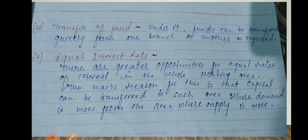The fourth point is equal interest rate. There is greater opportunity for equal rate of interest in the whole working area. The main reason for this is that capital can be transferred to such area where demand is more, from the area where supply is more. Equal interest rate means the interest on both deposits and withdrawals will be the same.